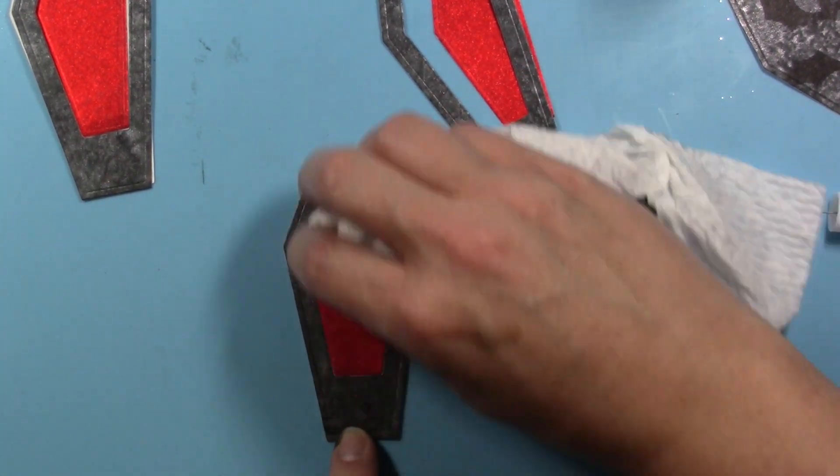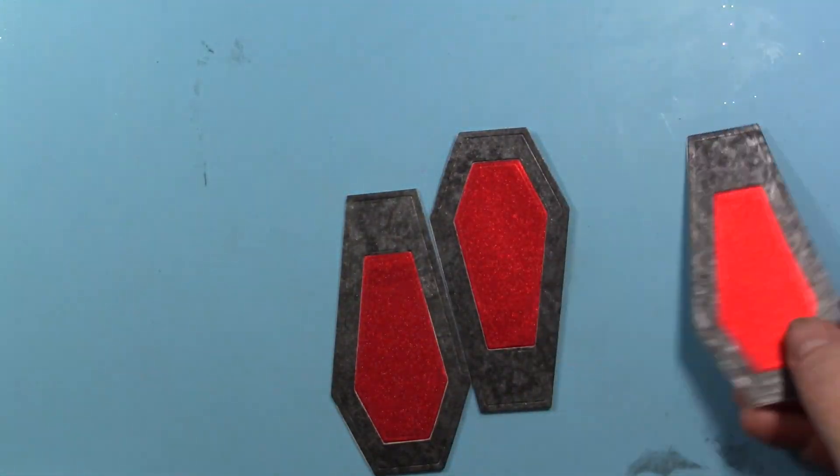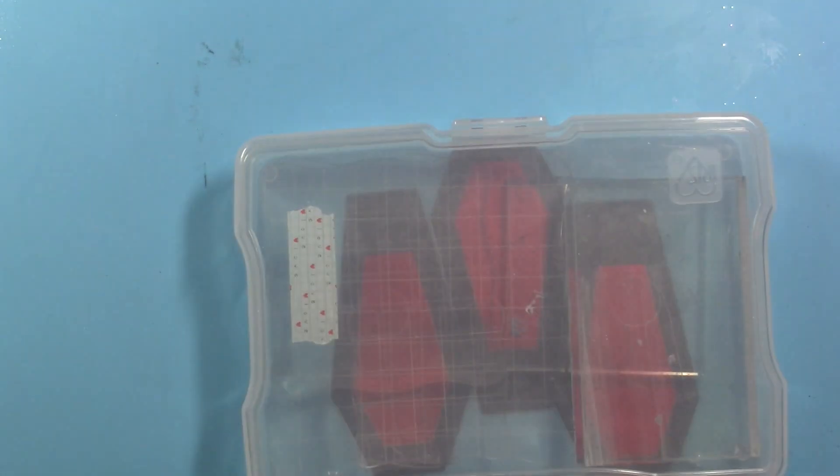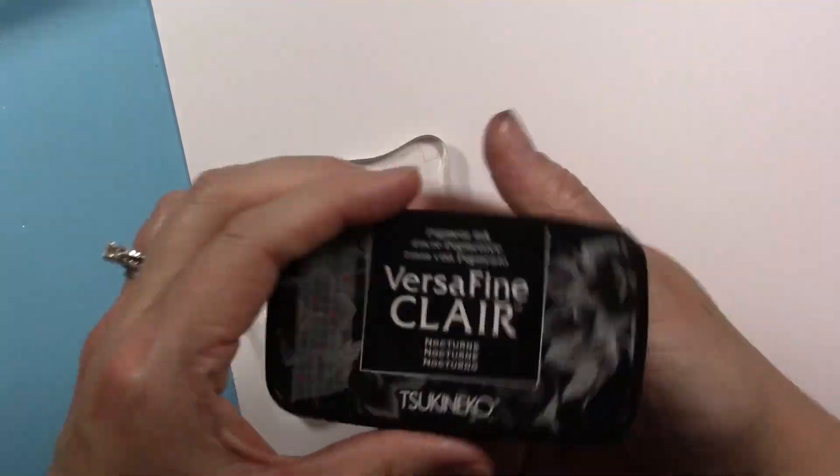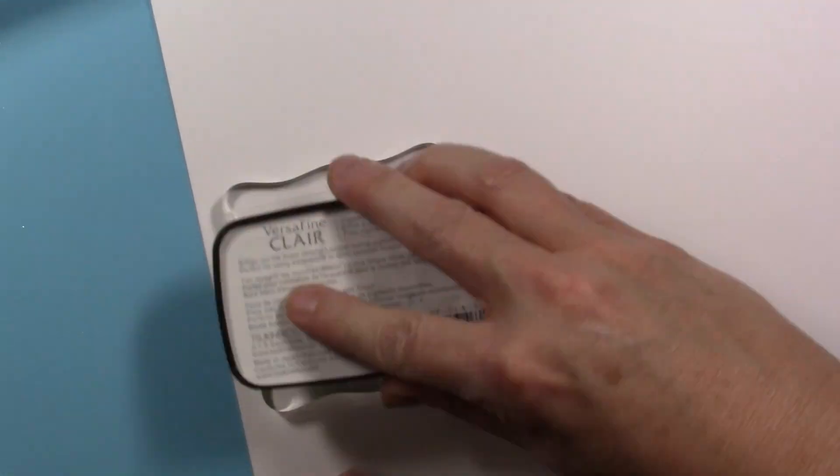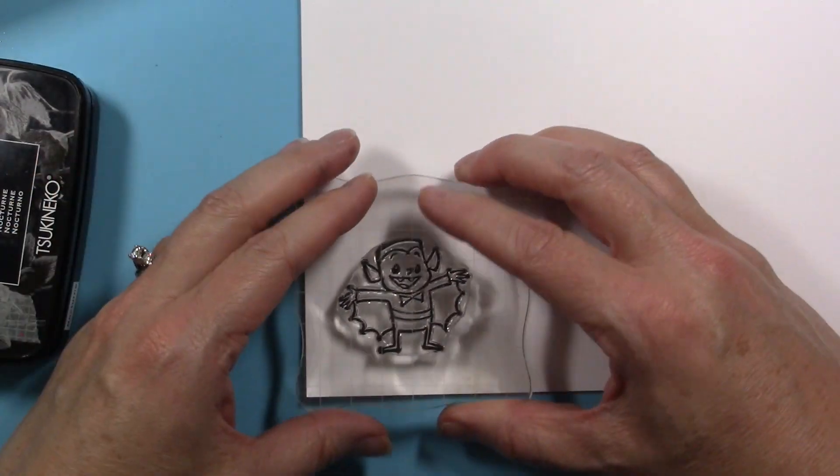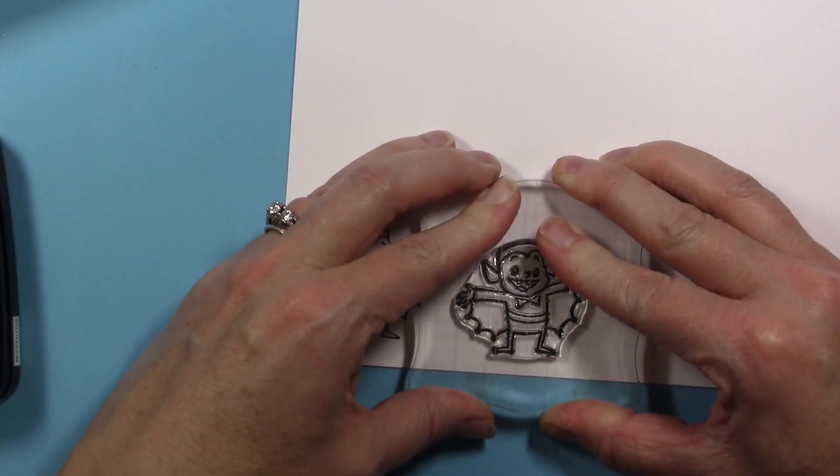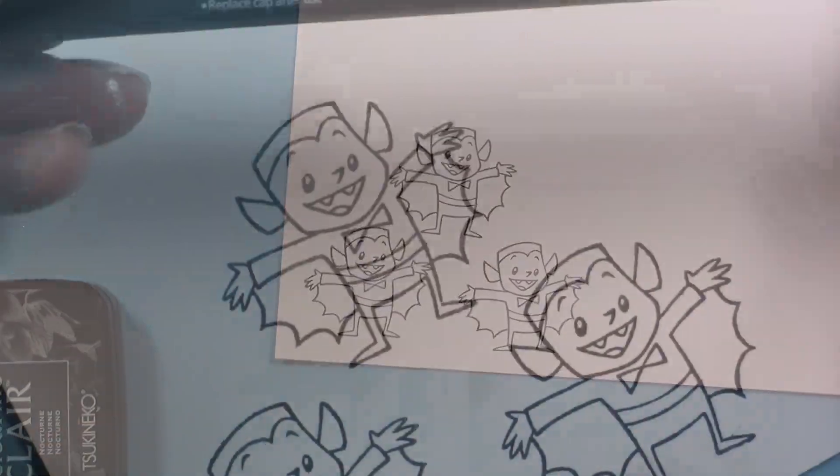I do use a paper towel to absorb any of the glue that I squeezed out of the center there so it doesn't show. It does dry clear though, which is nice. And then I'm just going to add a little weight to that so those can dry. In the meantime, I'm going to take a piece of Hammermill paper and ink this little vampire from Sugar Pea Designs up with my Nocturne VersaFine Clair. I'll do that three times so I can make three tags, and then I'm going to color these little guys with my Memento markers.